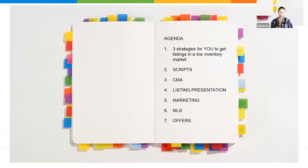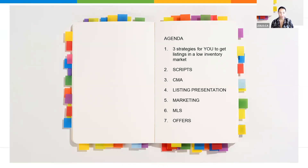Here's the agenda — this is what we're going to talk about. I'm going to introduce three strategies for you to get listings in a low inventory market, which is what we're in right now. Even if you are still working on your initial five leases here at Zolo — yes, you need to do your five leases for us to turn on your lease leads, and then your buyer leads after those five transactions — you are a licensed realtor, so you can start advertising and trying to get listings outside of the Zolo system before you start receiving those buyer leads.